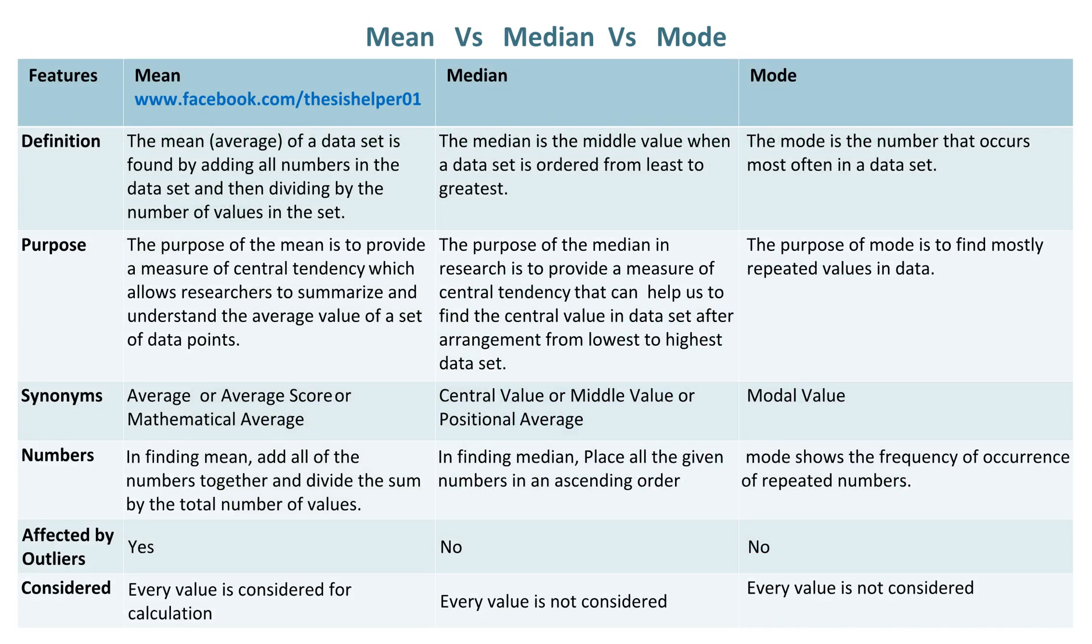The mean average of a data set is found by adding all numbers in the data set and then dividing by the number of values in the set. The median is the middle value when a data set is ordered from least to greatest. The mode is the number that occurs most often in a data set.